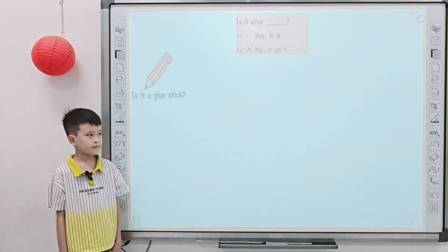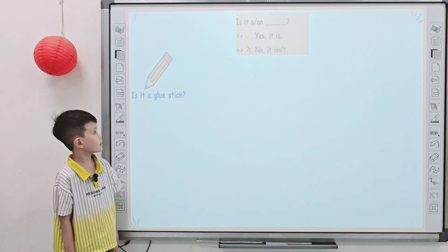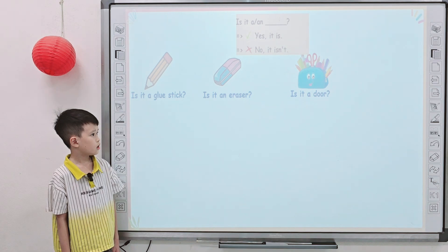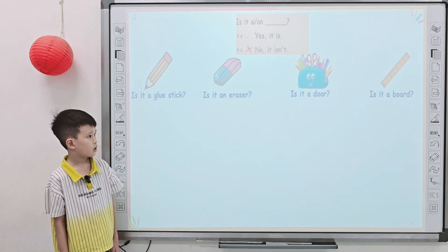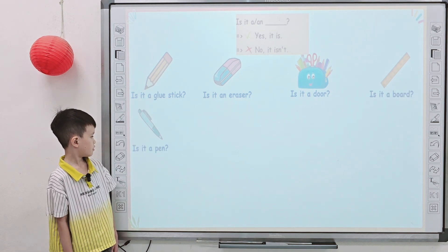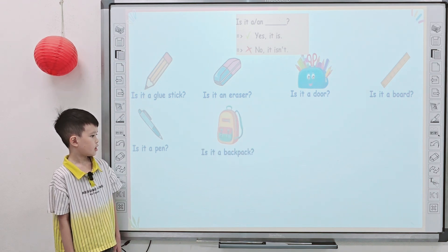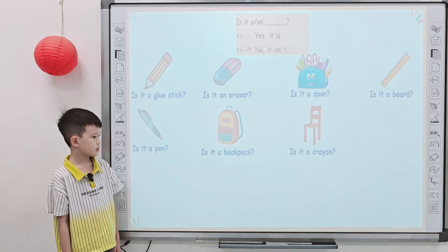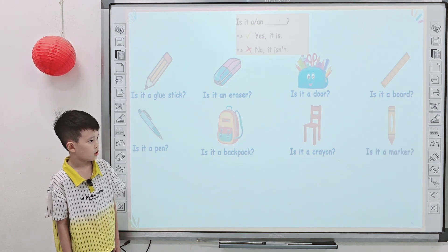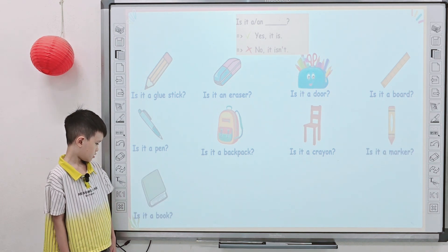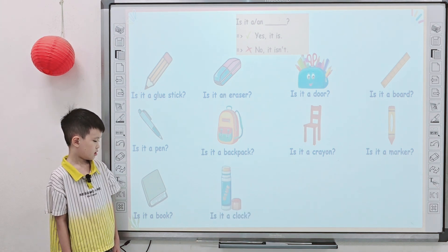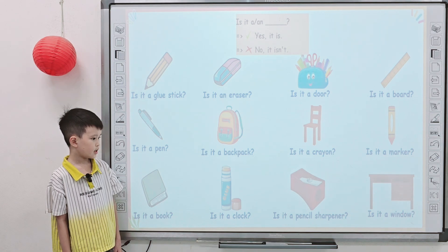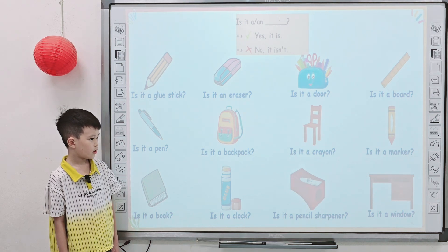Now, next one. Look, it's going to me. Is it a glue stick? No, it isn't. Is it an eraser? Yes, yes. Is it a door? No, it isn't. Is it a board? No, it isn't. And is it a pen? Yes, yes. Is it a backpack? Yes, yes. And is it a crayon? No, it isn't. Is it a marker? No, it isn't. Is it a book? Yes, yes. And is it a clock? No, it isn't. Is it a pencil sharpener? Is it a window? No, it isn't.